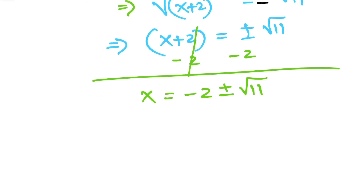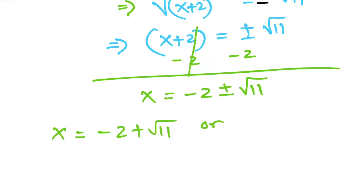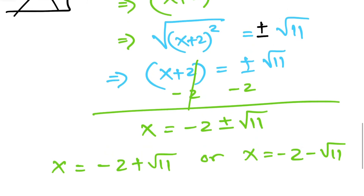So what does x = -2 ± √11 mean? It means x is either equal to -2 + √11 or x = -2 - √11. And with that, we are done.